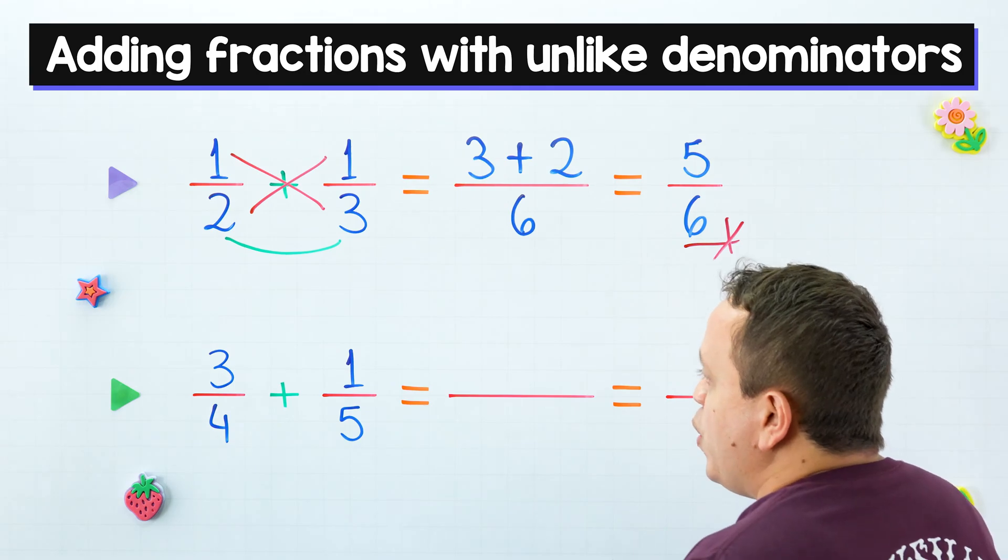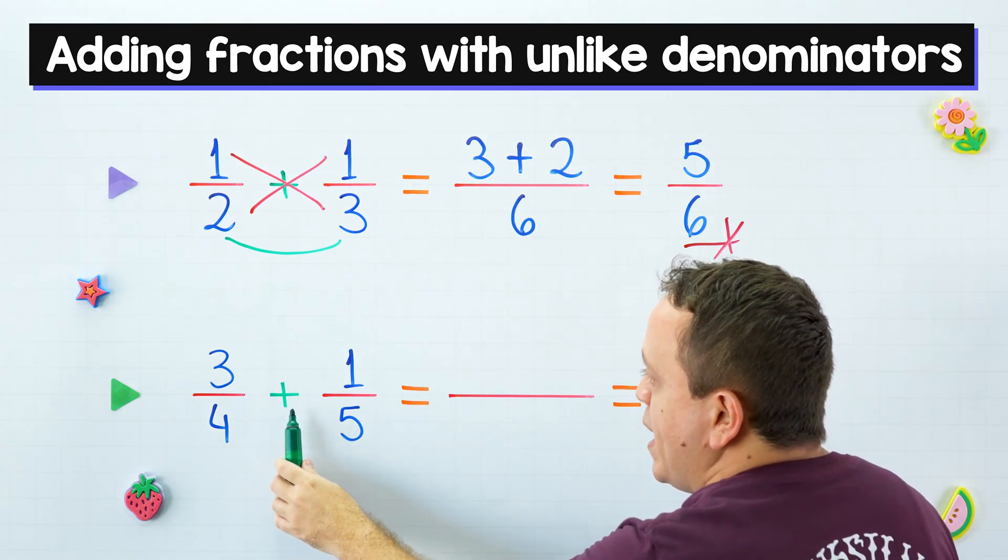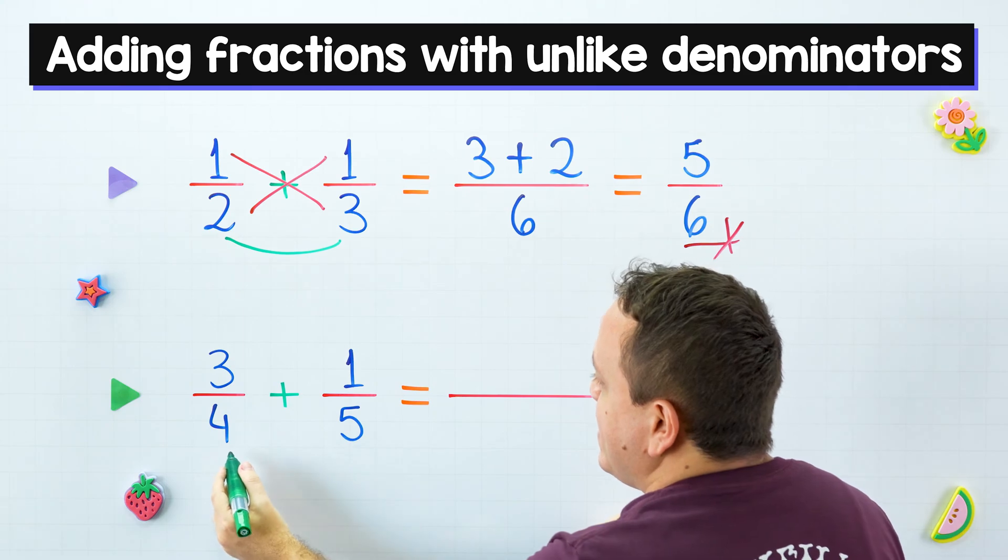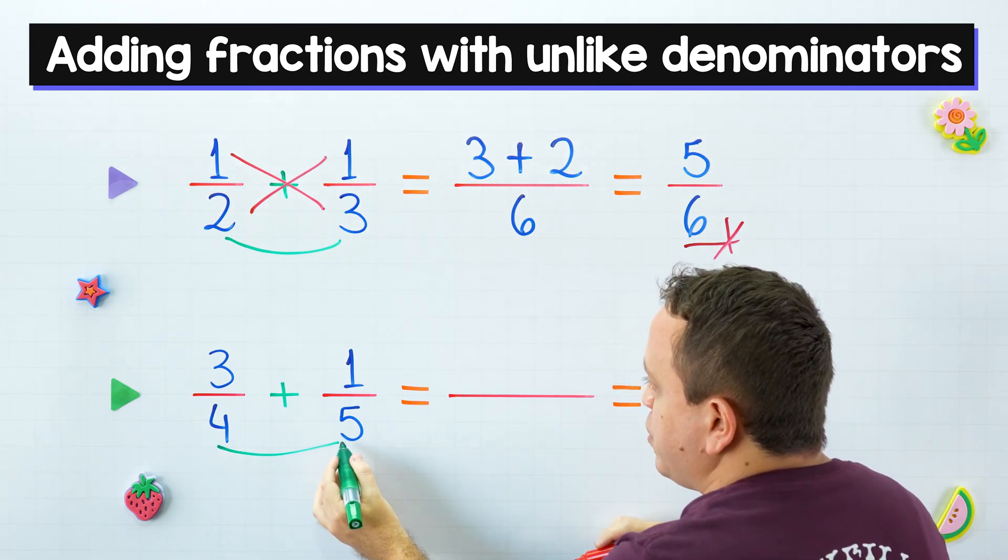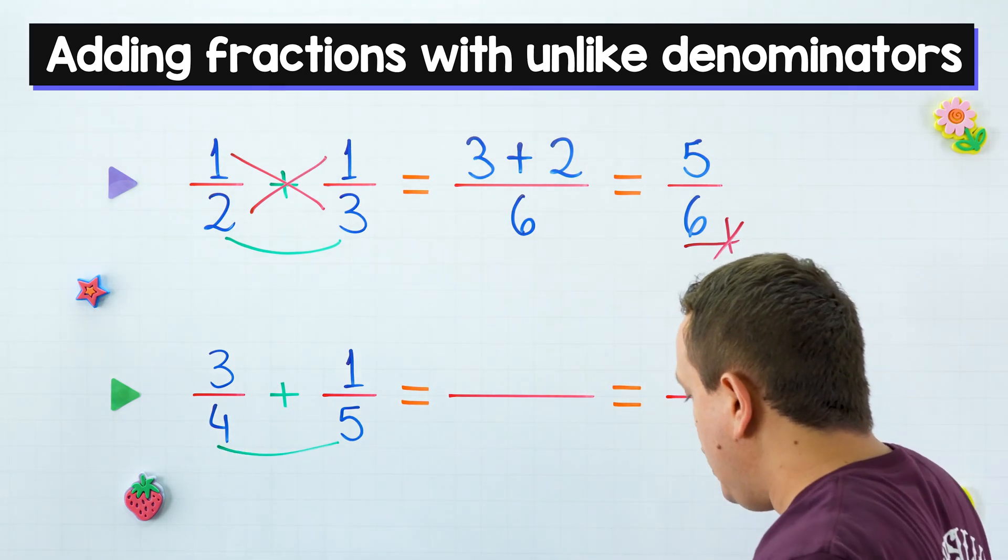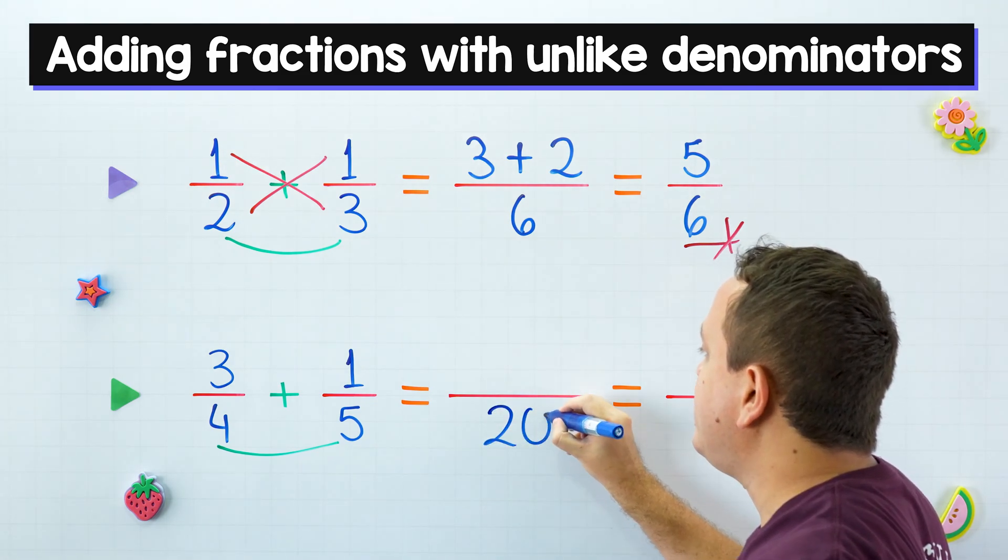In the second example, we have to add three fourths plus one fifth. Let's start multiplying the denominators. Four times five equals 20.